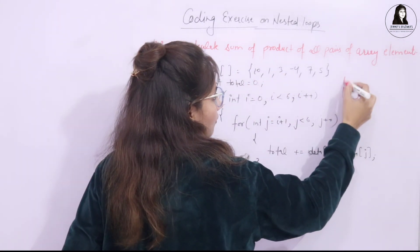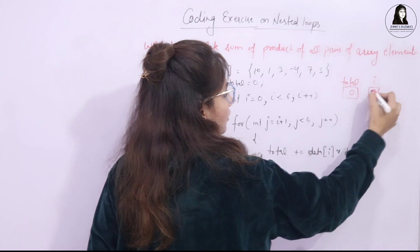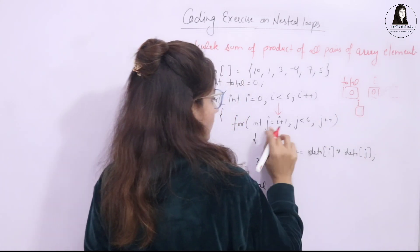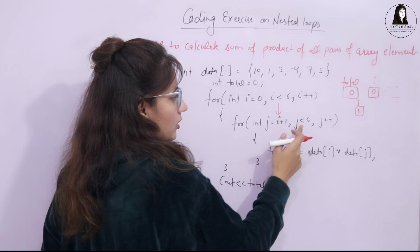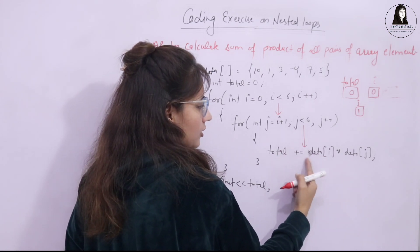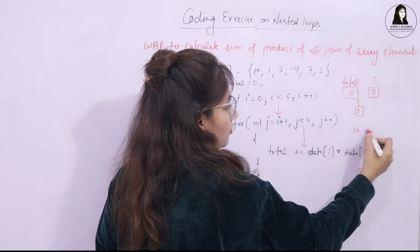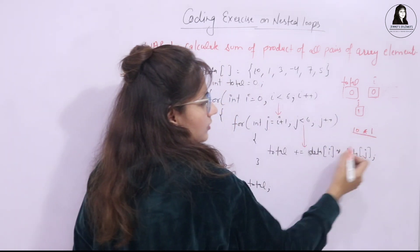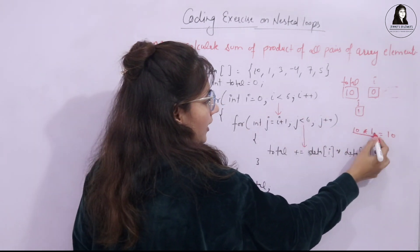We have the array and a variable total, initially 0. i starts at 0 — condition true, we enter the loop. j = i+1 = 1. Condition true: 1 < 6. Now total += data[0] * data[1] = 10 * 1 = 10. Total becomes 10. This is the first pair: 10 and 1. That's why j is initialized to i+1.